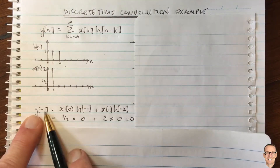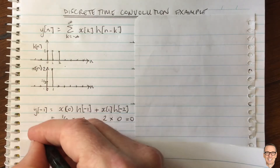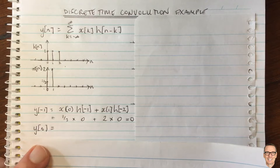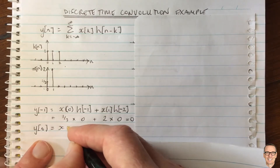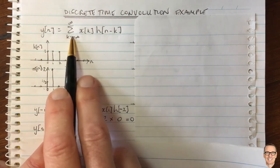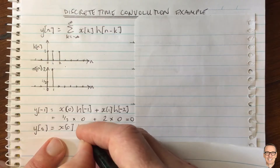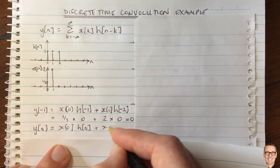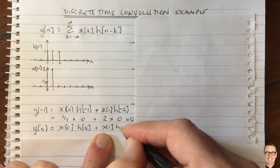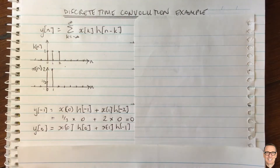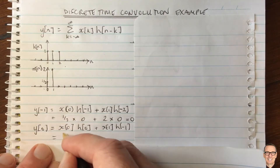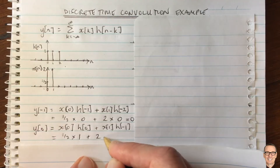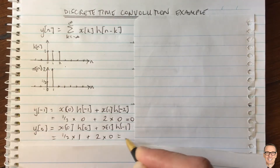Now let's do y[0]. Again there are only two non-zero terms: x[0] times h[0] (since n equals zero and k equals zero), plus x[1] times h[-1]. Evaluating from the graph: this equals one half times h[0], where h[0] is one, plus two times h[-1], which is zero. So y[0] equals one half. You could keep doing this for every single value of n, and that's what a computer would do.